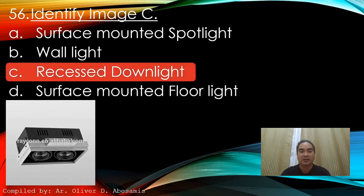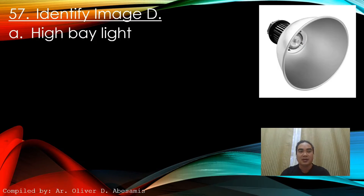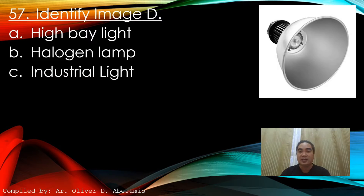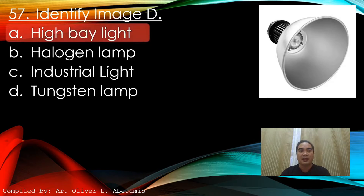Identify the image. A. High bay light. B. Halogen lamp. C. Industrial light. D. Tungsten lamp. Answer: A. High bay light.